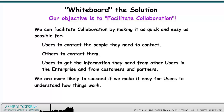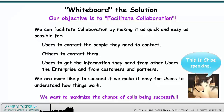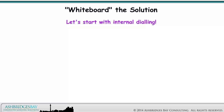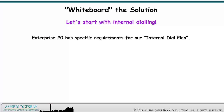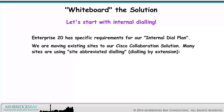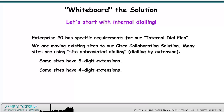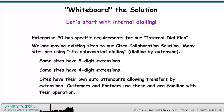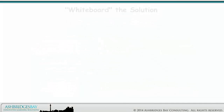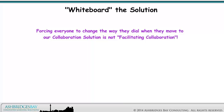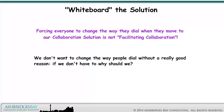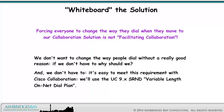We are more likely to succeed if we make it easy for users to understand how things work. We want to maximize the chance of calls being successful. Enterprise 20 has specific requirements for our internal dial plan. We are moving existing sites to our Cisco collaboration solution. Many sites are using site abbreviated dialing — dialing by extension. Some sites have 5-digit extensions and some have 4-digit extensions. Sites have their own auto-attendants allowing transfers by extension. Customers and partners use these and are familiar with their operation. Forcing everyone to change the way they dial is not facilitating collaboration — we don't want to change the way people dial without a really good reason. And we don't have to — it's easy to meet this requirement with Cisco collaboration.